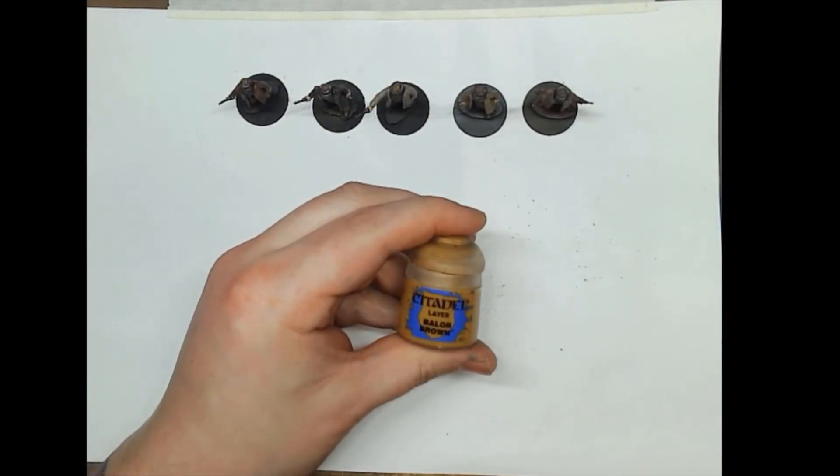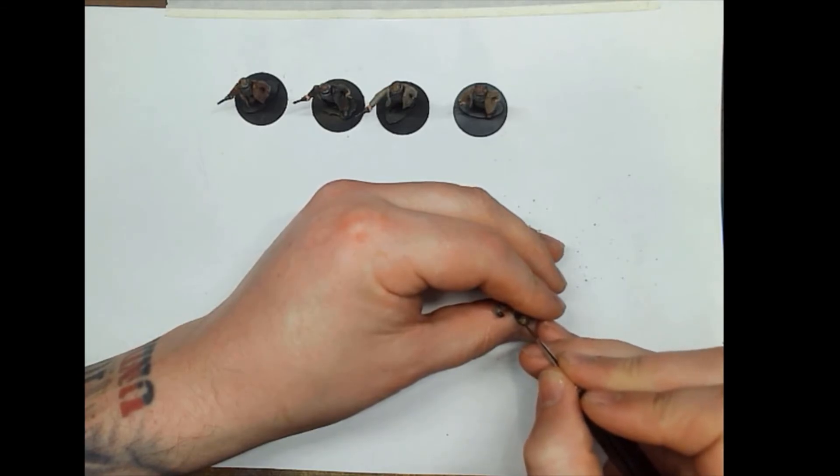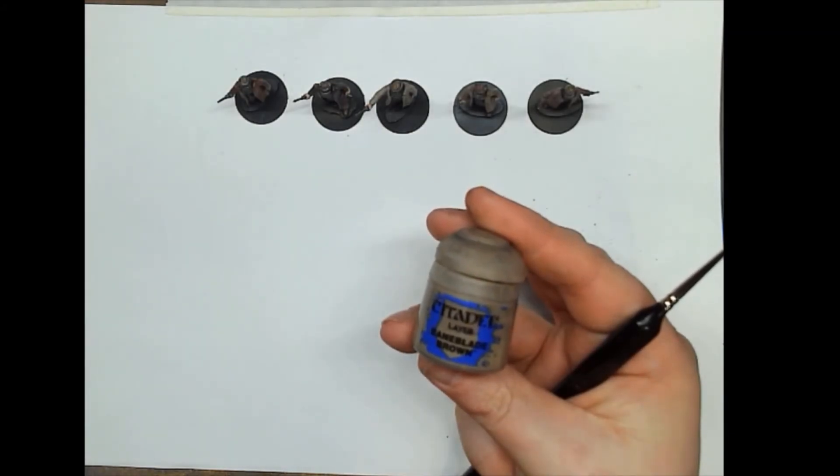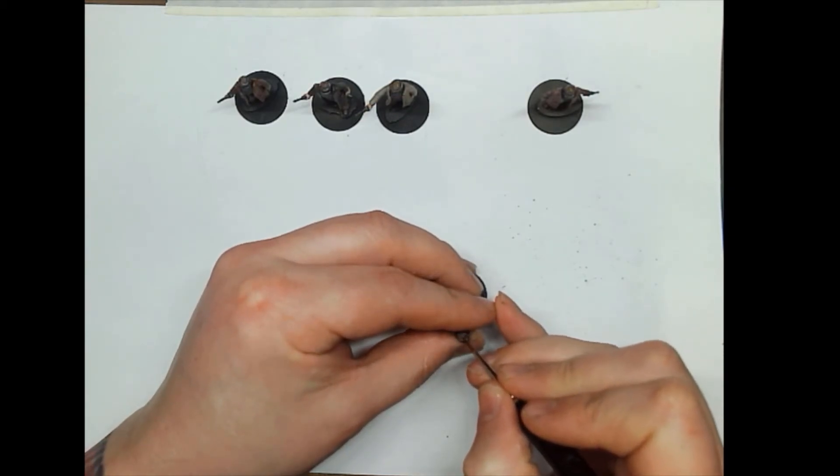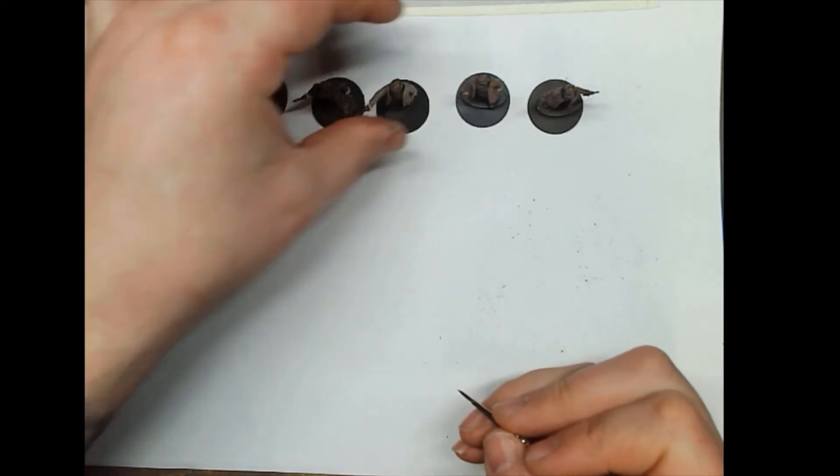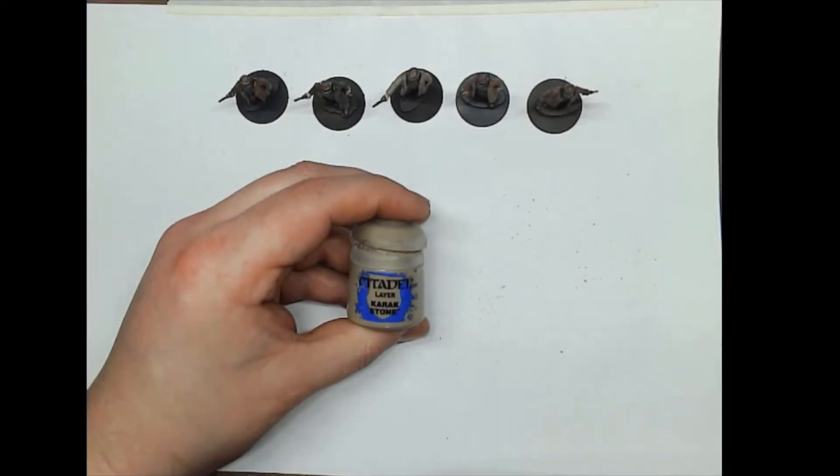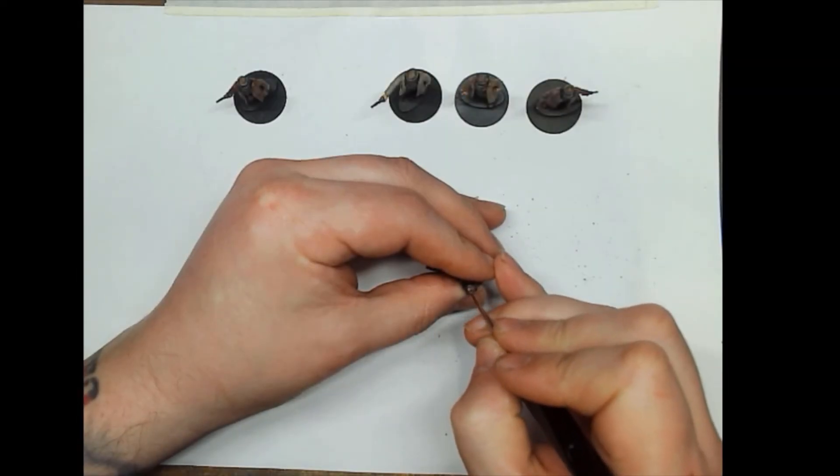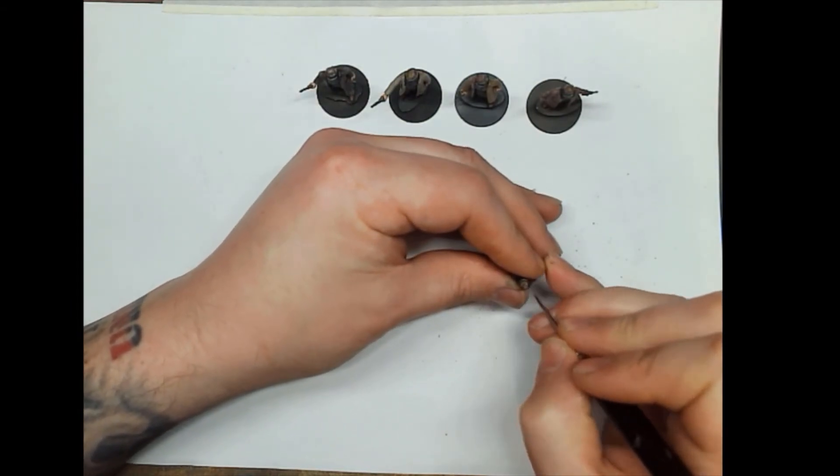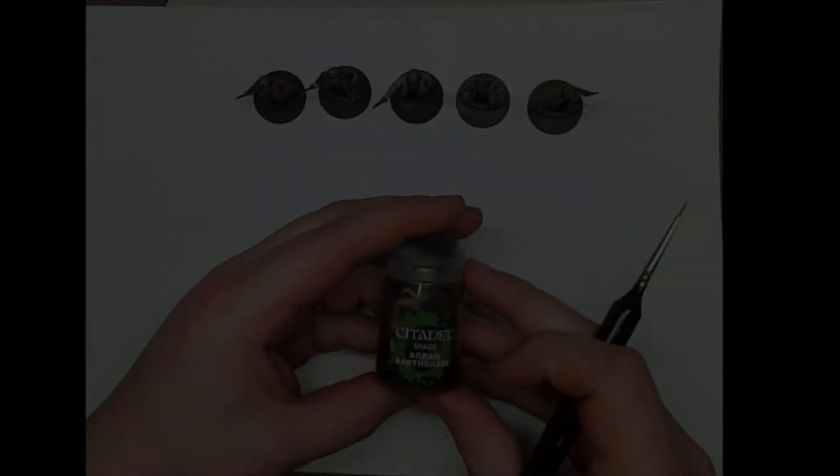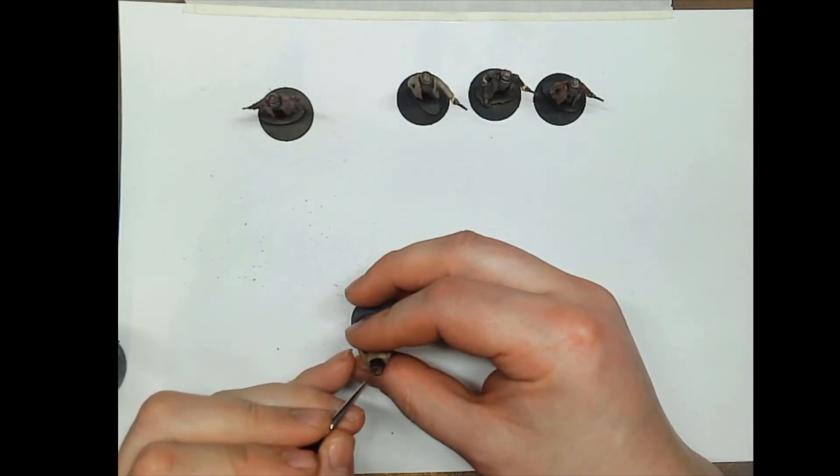I'm going to use some Balor Brown just to highlight up the Steel Legion Drab. It's not my usual highlight for this, but with the hair it actually looks quite good. And then some Baneblade Brown just to highlight up the other hair. A little bit of Karak Stone to give a third layer of colour to the hair. Finally, some Agrax Earthshade. We're going to use that in the recesses on the top of the head, just to mat down the hair and put all the colours together we've just used.